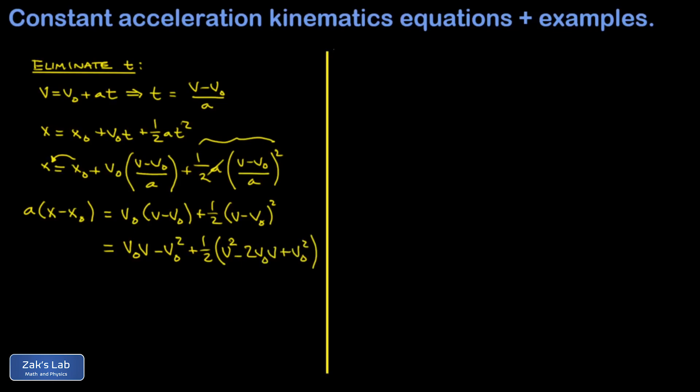And then I see that the v0 times v terms are going to cancel. When I distribute that one half, I end up with a negative one of those. And out in front, I have a positive one of those. And those are gone. So I get a one half v squared. And then out in front, I have a negative v0 squared. And then I end up with a plus one half v0 squared, which gives me negative one half v0 squared.